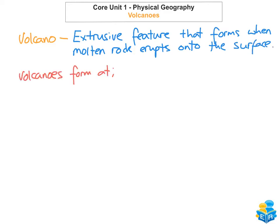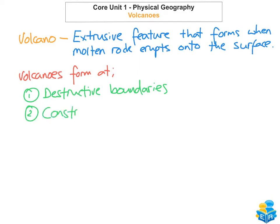So the first thing we're going to look at is where volcanoes actually form. Volcanoes form at three different locations. The first is destructive plate boundaries. The second location where you can find volcanoes is at constructive plate boundaries. And the third place where volcanoes form is an area called a hotspot.